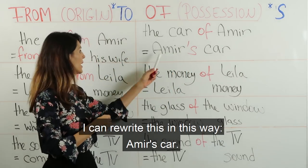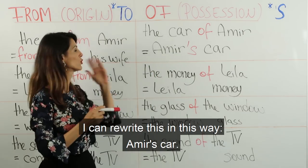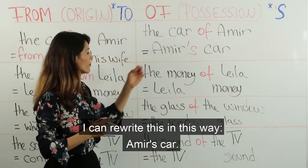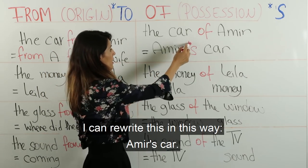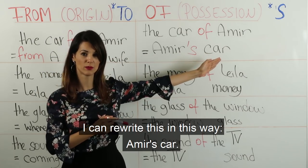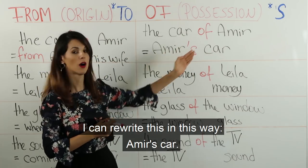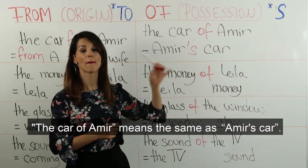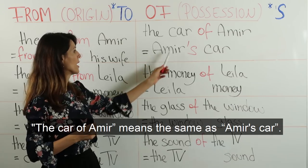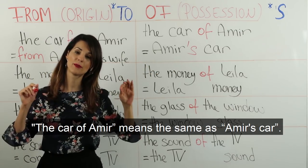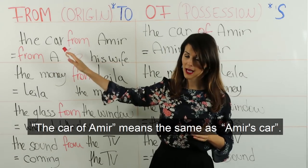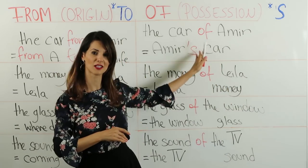Amir's car. فدايما منكتب اسم الشخص أو الشيء اللي بيمتلك شيء، من بعد هيك منضع الفاصل العالي وحرف الـ S، ومن بعد هيك الشيء اللي بيمتلكه. The car of Amir means the same as Amir's car. فهذا 'the car of Amir' إلو نفس المعنى مثل 'Amir's car'. واتنينيتون يعنوا سيارة أمير.